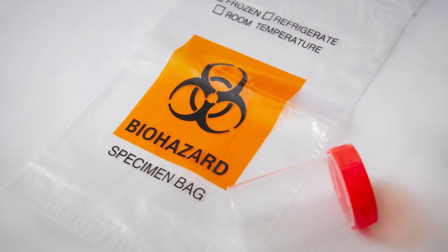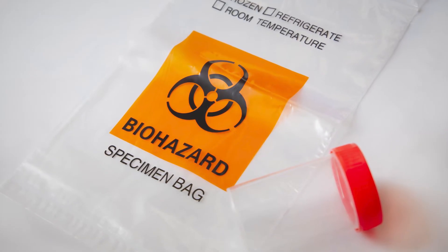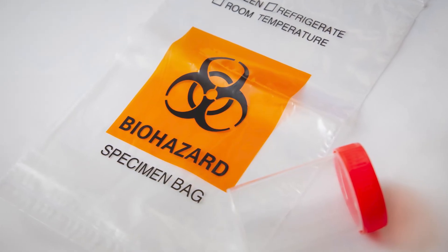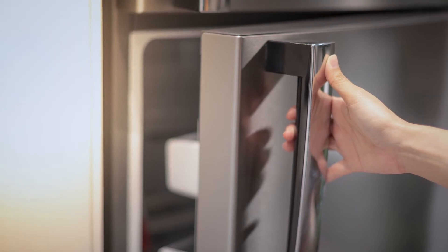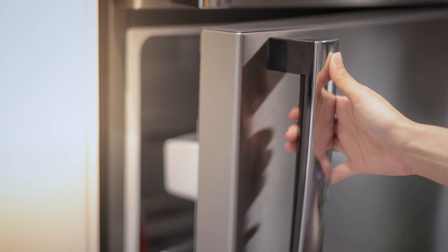If your kit includes a Styrofoam box, package the bag in the box with the frozen gel ice packs for shipment. Make sure that the gel packs are completely frozen. If you are shipping your sample the next day, place the bagged collection cup in your refrigerator overnight before packing and shipping it with the frozen ice packs.